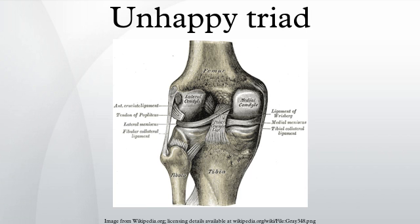Injury to the medial meniscus is about five times greater than injury to the lateral meniscus due to its anatomical attachment to the MCL. Lateral meniscal tears are more common in acute ACL injuries, whereas medial meniscal injuries are more common in chronic ACL-deficient knees. Meta-analysis shows that in acute injuries of the ACL associated with a meniscus tear, 44% were of the medial meniscus whereas 56% were of the lateral meniscus. In chronic ACL insufficiency, 70% were medial whereas 30% were lateral.